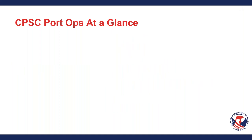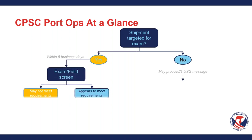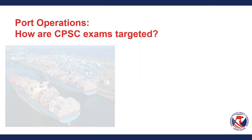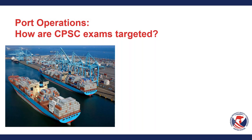Port operations at a glance: I have a chart showing how your imported cargo flows, and this is similar for any mode of transportation — ocean, air, or land border. How are exams targeted at the ports? There are three ways. First is local targeting, where we use our risk assessment methodology, or RAM system, which speaks directly to CBP's ACE system.